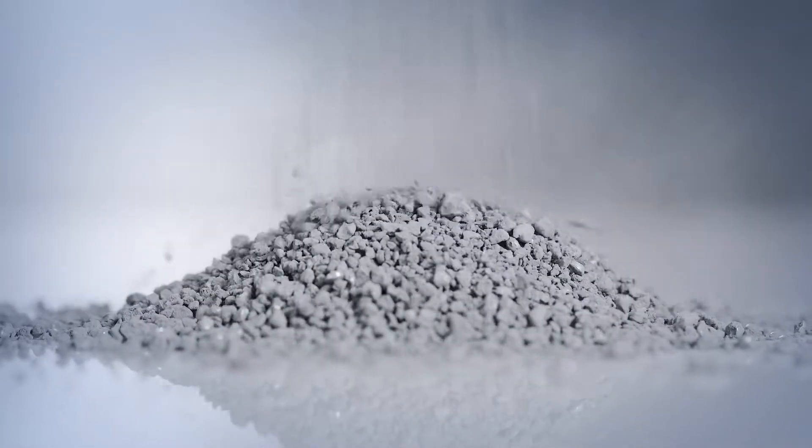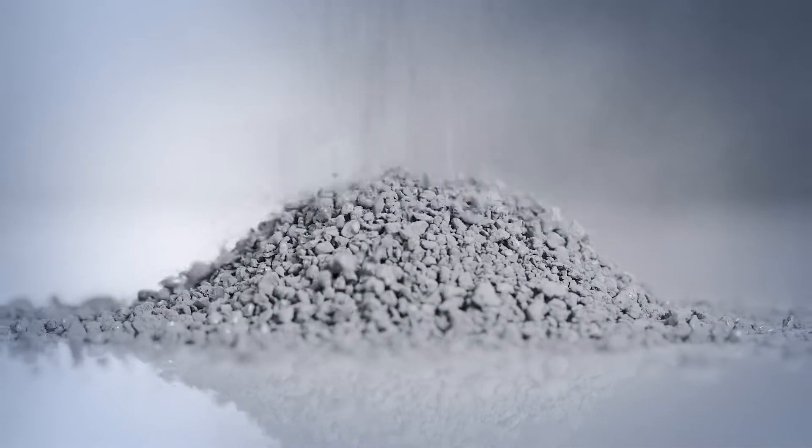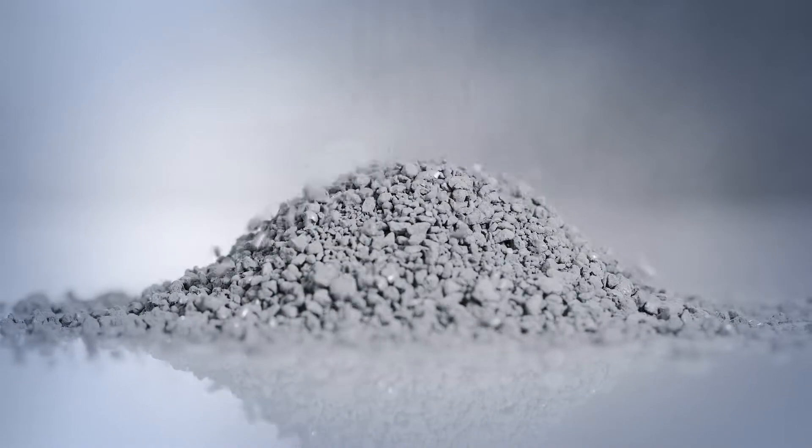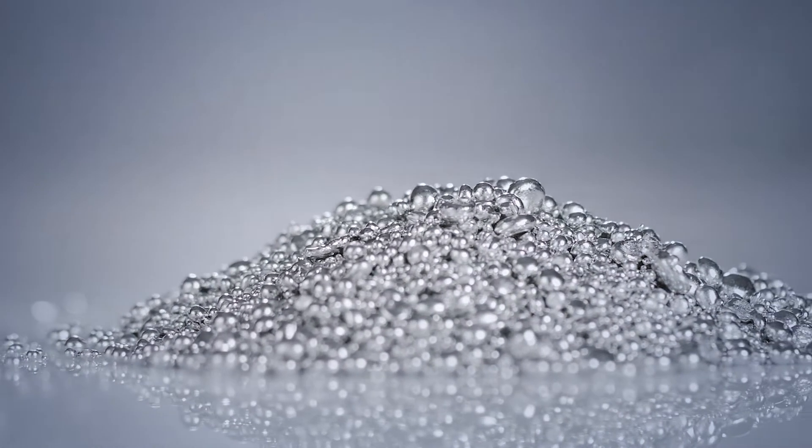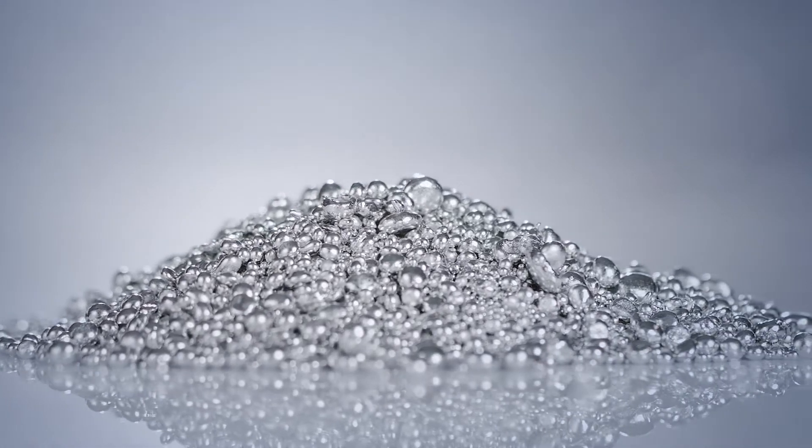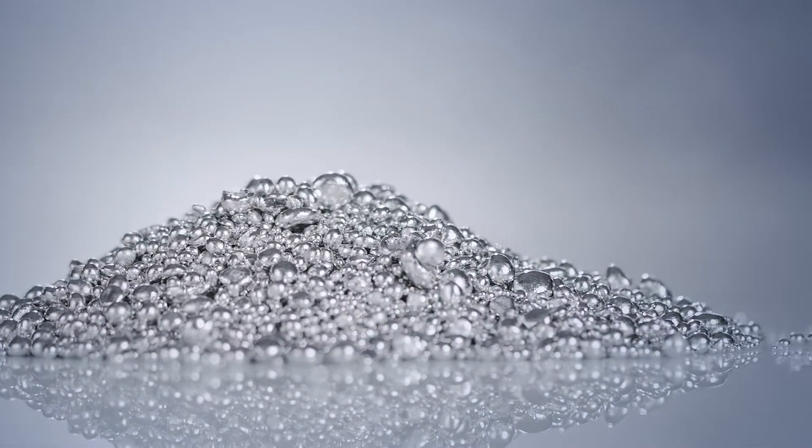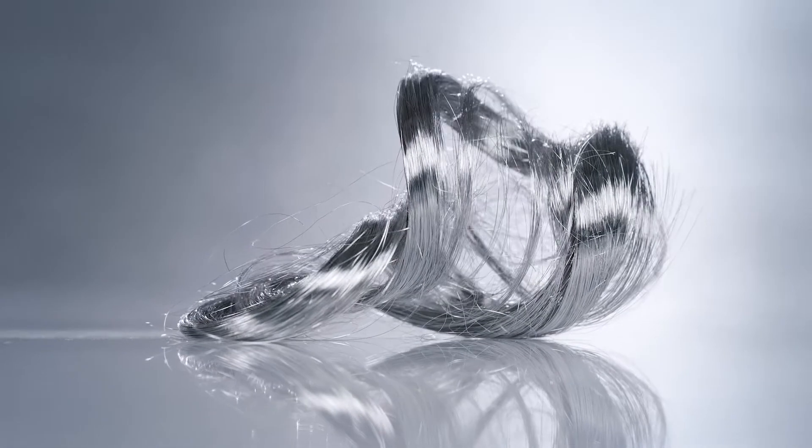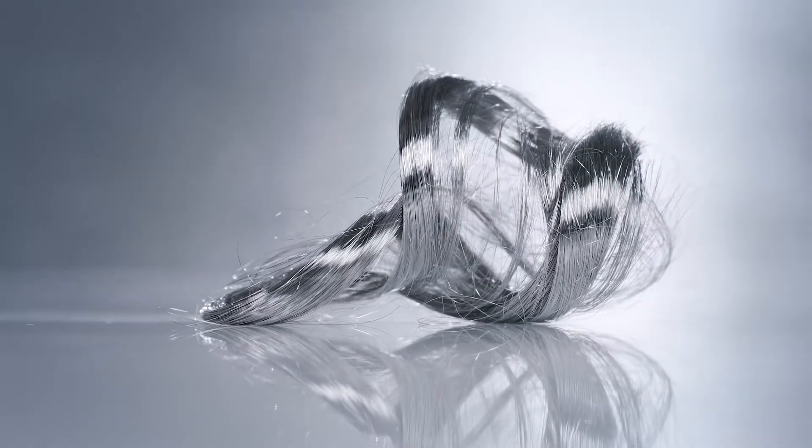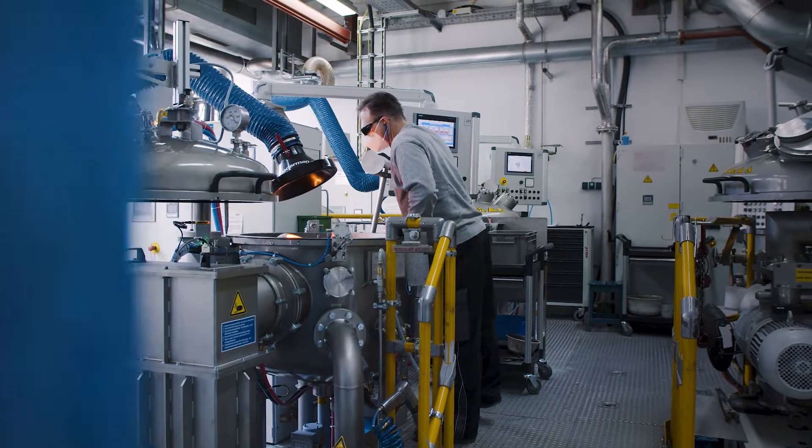Therefore, platinum, rhodium and/or palladium are combined to form a specific alloy composition. High quality starting materials with purities according to specification are used in form of granules, sponge or wires. They are weighed in and prepared for the next step, the melting of the alloy.